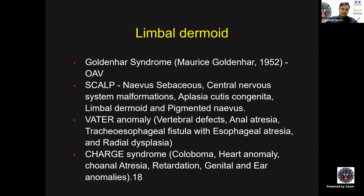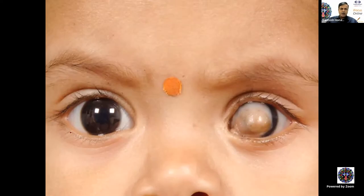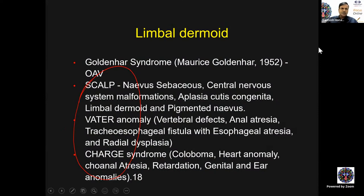Other syndromes associated with limbal dermoid include SCALP syndrome — nevus sebaceous, central nervous system malformations, aplasia cutis congenita, limbal dermoid, and pigmented nevi; VATER anomaly — vertebral defects, anal atresia, tracheoesophageal fistula with esophageal atresia, and radial hypoplasia; and CHARGE syndrome — coloboma, heart anomaly, choanal atresia, retardation, genital and ear anomalies. Whenever you have a patient with bilateral limbal dermoid, your antenna should rise and you should suspect syndromic associations.